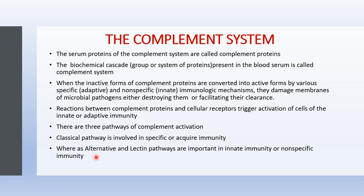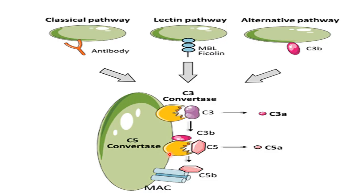The complement system is activated by three pathways: the classical pathway, the alternative pathway, and the lectin pathway. The classical pathway is mainly involved in specific or acquired immunity, whereas the alternative and lectin pathways are important in innate or non-specific immunity. These pathways will be discussed in detail in a separate topic on the complement system.